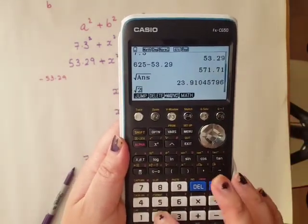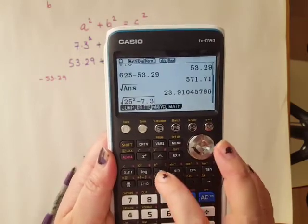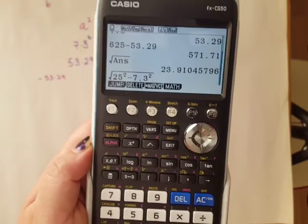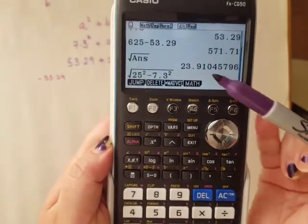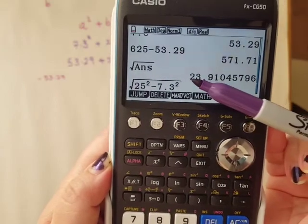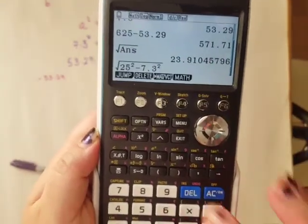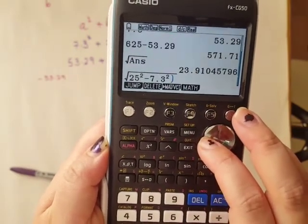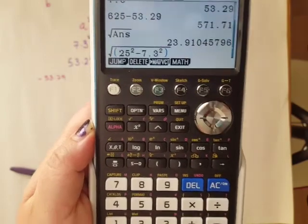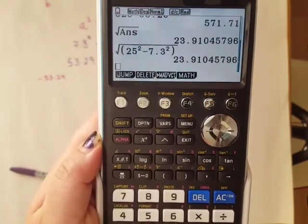You can also type it in one line in your calculator like this: square root 25 squared minus 7.3 squared. Just check that on your calculator, you can see the horizontal line of the square root go all the way across. Your calculator might want you to write brackets in like this. It'll just depend on what model you have. There's your final answer all in one step.